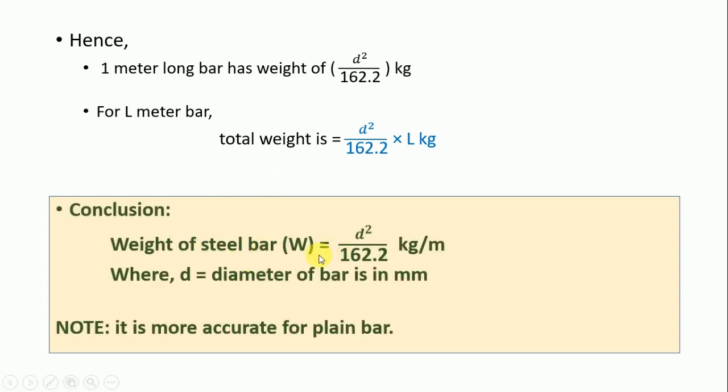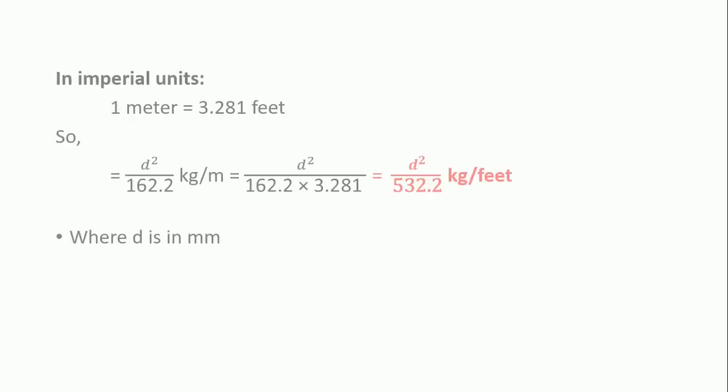Weight of steel bar W is equal to d squared by 162.2 kg per meter, where d is diameter which is in mm. This is more accurate for plain bar. In imperial units, one meter is 3.281 feet.